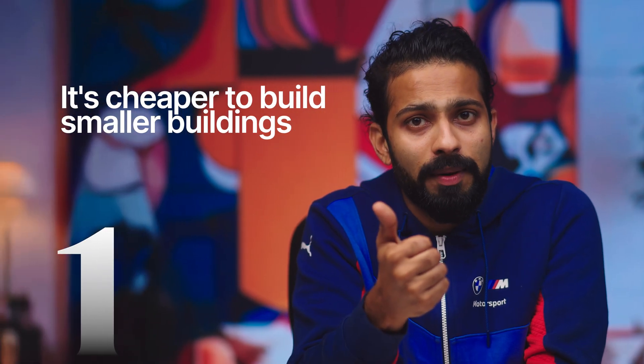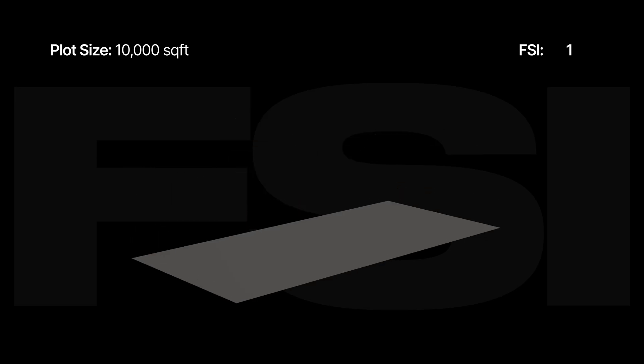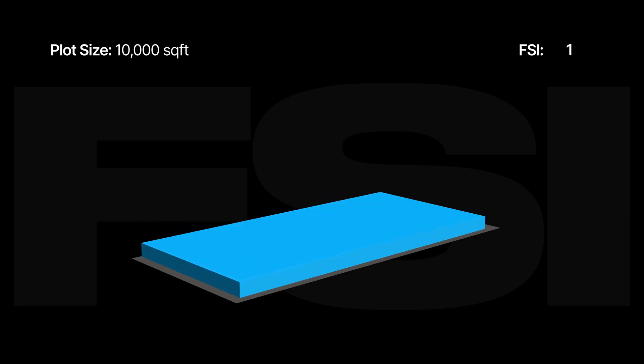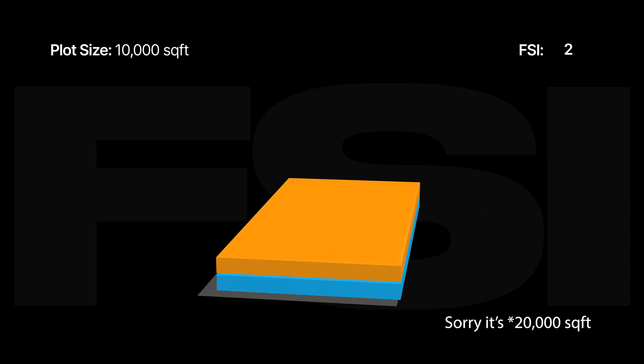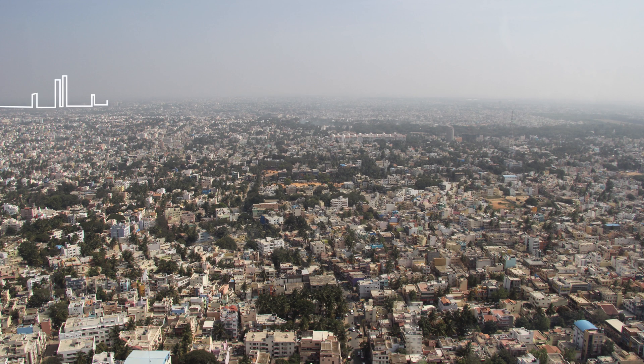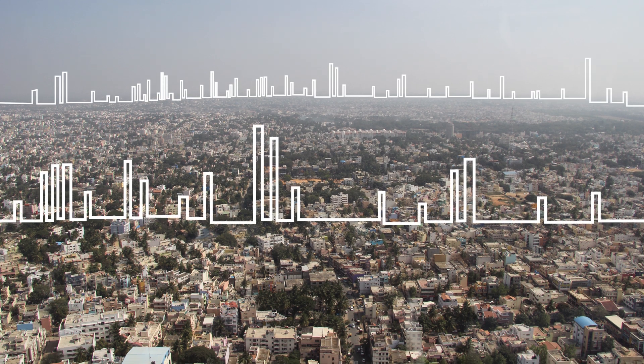But why horizontal? Well, there were two very important reasons for it. It's cheaper to build smaller buildings, and building smaller buildings takes much less time. So the government approved this plan and introduced FSI limits — the Floor Space Index. Basically, if you have a plot size of 10,000 square feet and the FSI limit is 1, then you can build 10,000 square feet of building on that land. And if the FSI is 2, then you can build 20,000 square feet of building on that land. This FSI, or Floor Space Index, is the main metric that dictates the skyline in our cities.